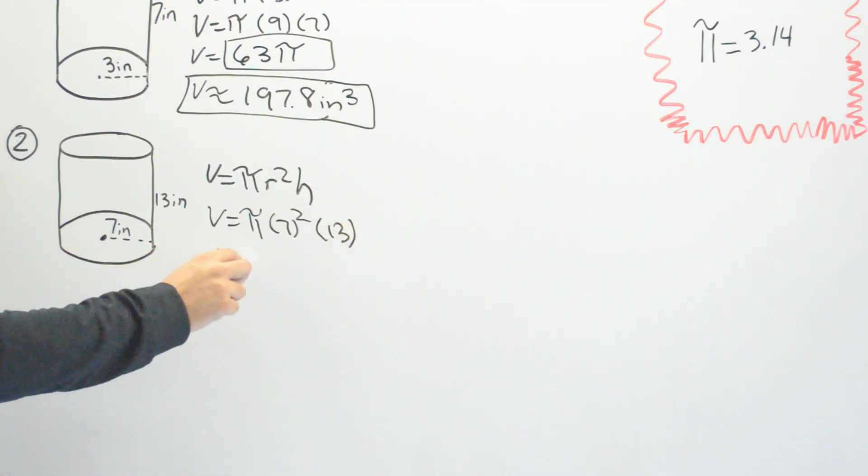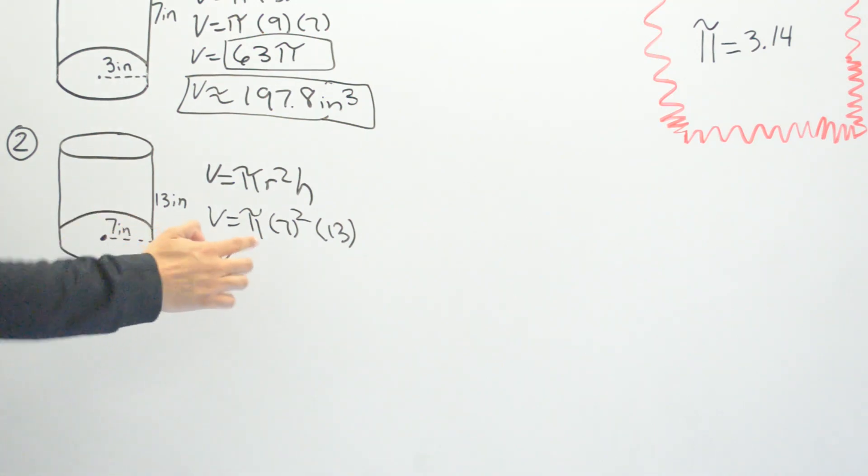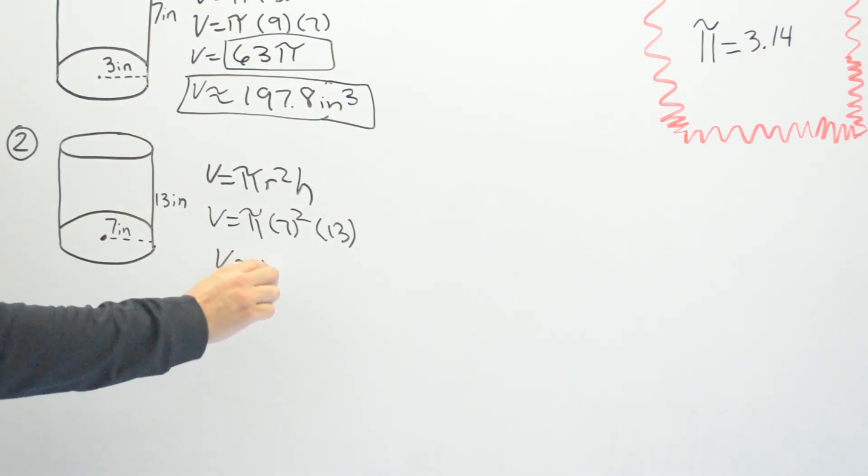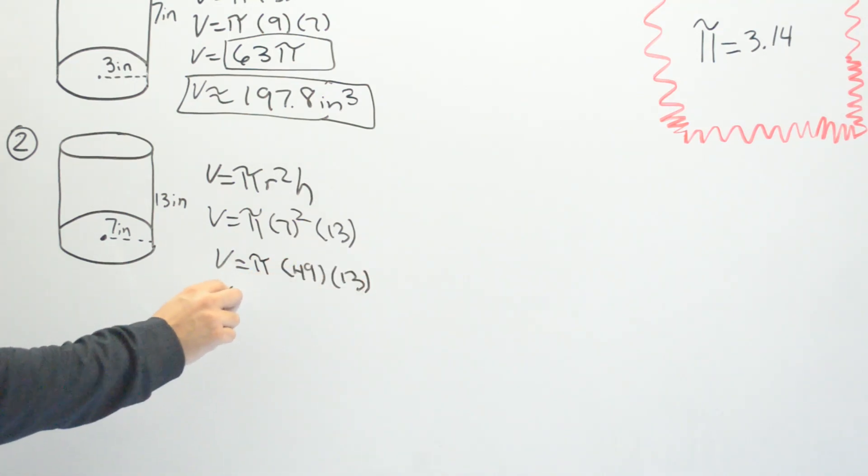Once again, you don't have to go ahead and write the formula. We already have the formula there, I just write it for you guys step by step so you know how I'm getting where I'm going. Then after this, go ahead and solve pi times seven. Seven times seven is gonna be 49 times 13. Then I have V equals 13 times 49 is 637 pi.